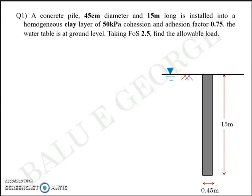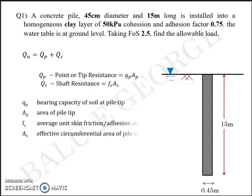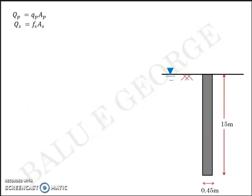Now to arrive at the allowable load you need to have the ultimate load which is given by QU equal to QP plus QS, where QP is a point or tip resistance which we have discussed as qp·Ap and QS is a shaft resistance fs·As. Small letter qp is the bearing capacity of the soil at the pile tip. Ap is the area of the pile tip cross sectional area. fs is average unit skin friction in case of sand or adhesion along the shaft in case of clay. As is a circumferential effective area of the pile shaft.